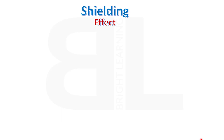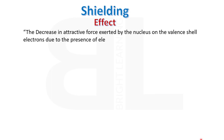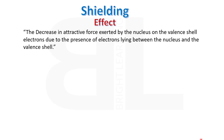Shielding effect and effective nuclear charge are phenomena that suggest how positive and negative charges coexist in an atom. The decrease in attractive force exerted by the nucleus on the valence shell, due to the presence of electrons lying between the nucleus and the valence shell, is called shielding effect.